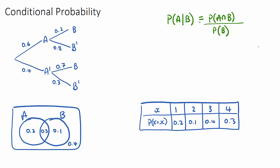This is the formula — you may see it in a slightly different form — but if you ever have something given that something, it's the intersection of the two divided by the given-that component. These types of questions appear in a few different ways, and we're going to do three quick examples: a tree diagram, a Venn diagram, and a table of probabilities.